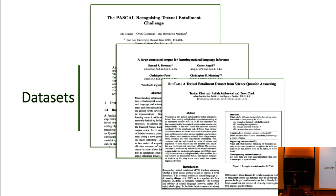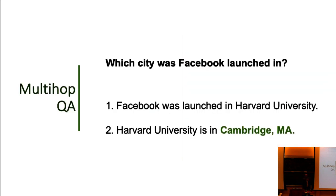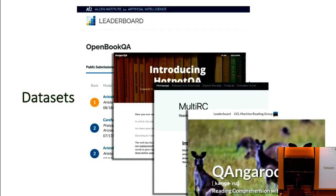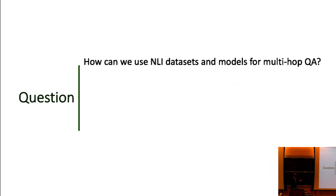There have been large NLI datasets — close to a million pairs — and inference datasets created specifically for question answering style problems. There's data available for building these models, and we have model choices — there's been a leaderboard, plenty of models developed. Similarly in multi-hop QA, lots of datasets are coming up, with some model choices. The question we started with was: how can we use these natural language inference datasets, which have been defined on sentence-to-sentence entailment, and adapt them for multi-hop QA, since there are commonalities between these tasks?